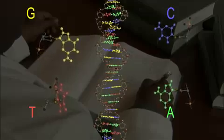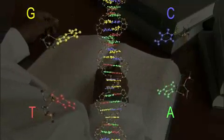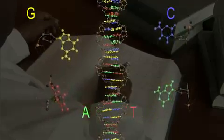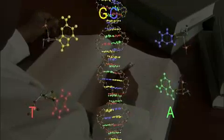There are two of these base molecules for each step on the ladder, and it is always either A and T together, or G and C together.